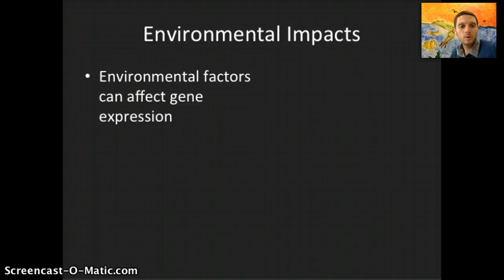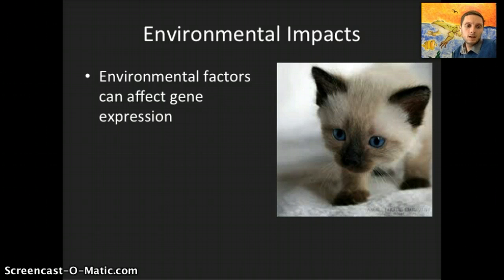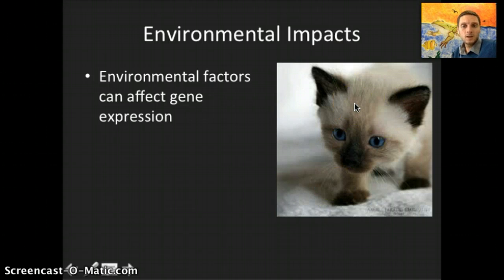The environment can impact the expression of genes. For example, skin pigmentation can be influenced by the environment, and an uneven distribution of morphogens can affect patterns of gene expression as embryonic cells are differentiating. A good example is Siamese cats, which have distinctive coloration due to a gene coding for tyrosinase — the first pigment protein produced. A mutant allele allows normal pigmentation at temperatures below body temperature, but if temperature increases, the protein becomes inactive, resulting in less pigmentation and a lighter color.